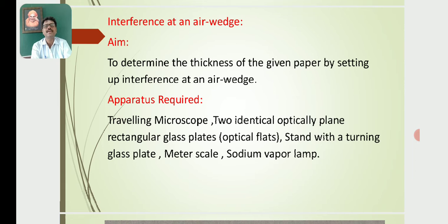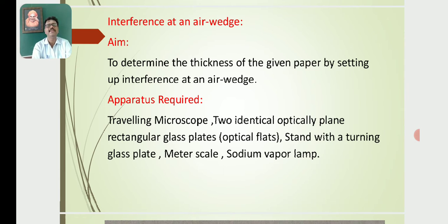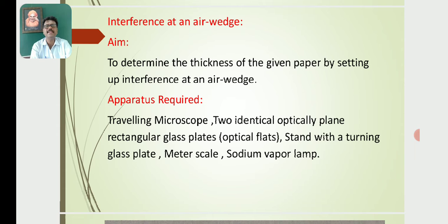For the study of determination of thickness of a given paper using the Interference at an Air Wedge setup, we will cover: what experimental arrangements are required, how they are arranged, the experimental procedure, how the result is obtained, and what formula is used. The aim of the experiment is to determine the thickness of the paper by setting up Interference at an Air Wedge.